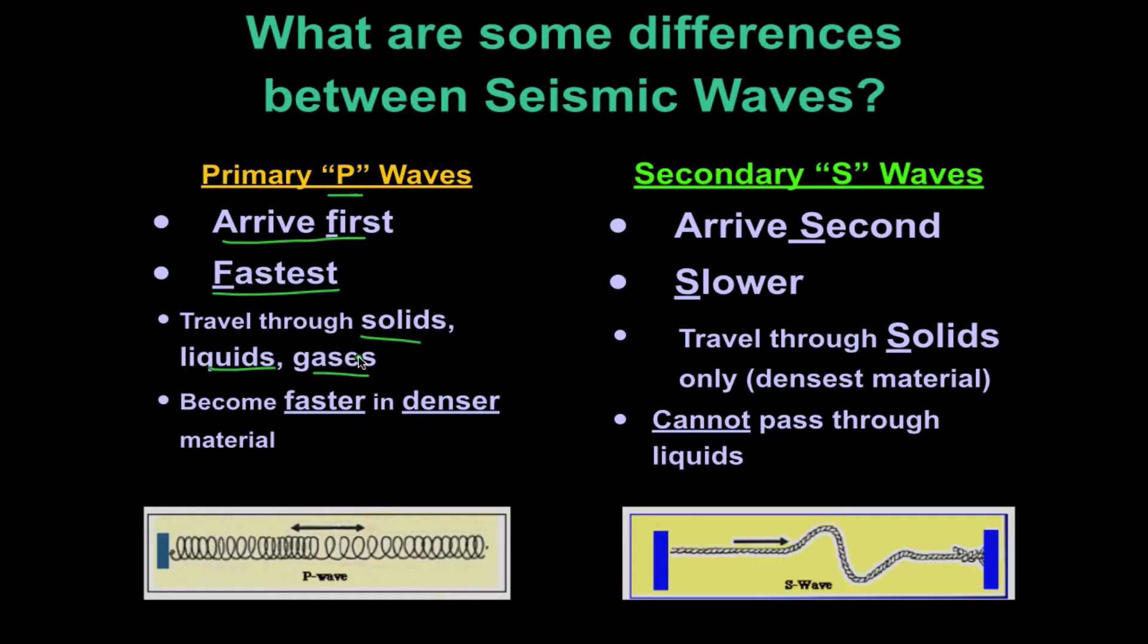Remember, Earth's crust, or actually the Earth itself, is made up of multiple different layers of material, and some of those materials are going to be liquid, semi-liquid, or solid. So this is extremely important that P waves are able to go through all. They also become faster in denser material. Those particles are closer together, so the transfer of energy can go faster through it.